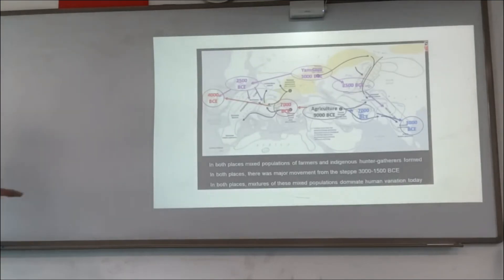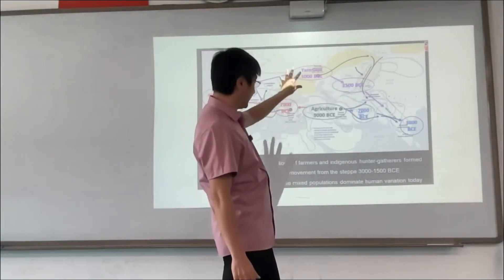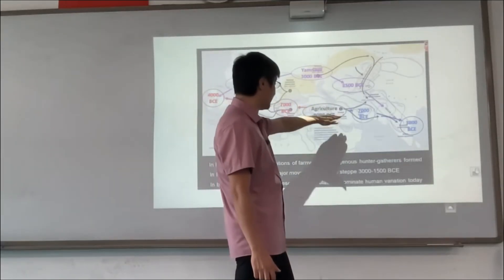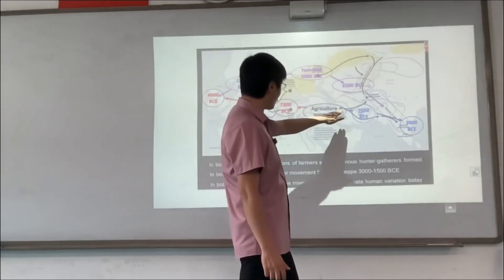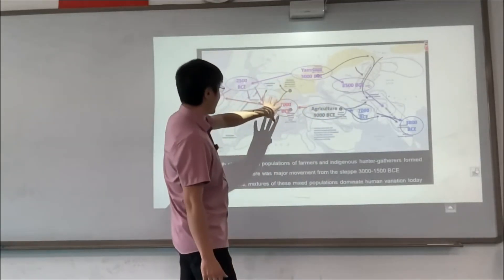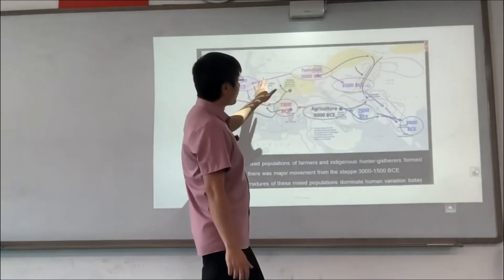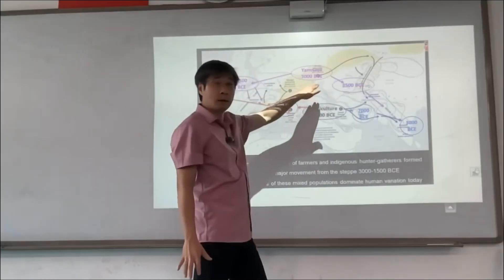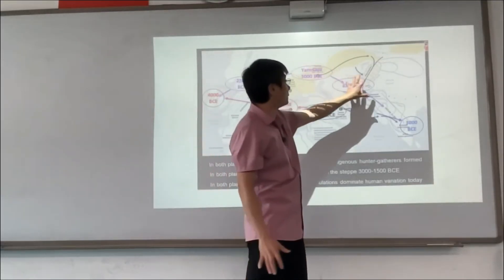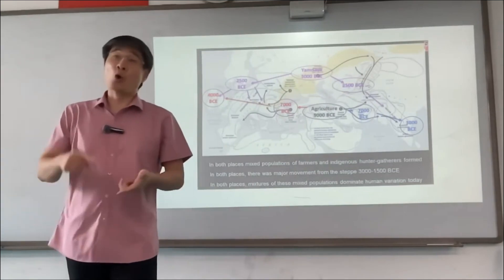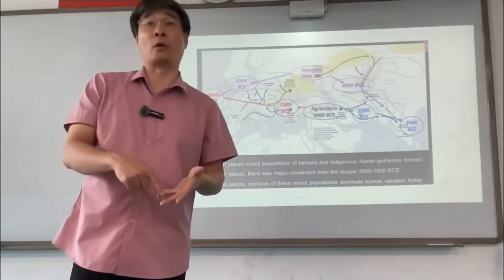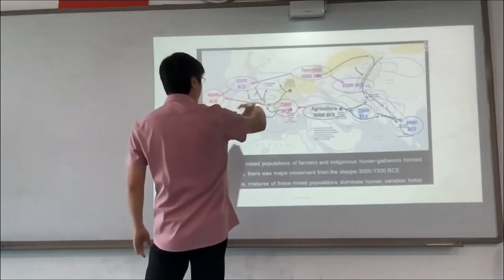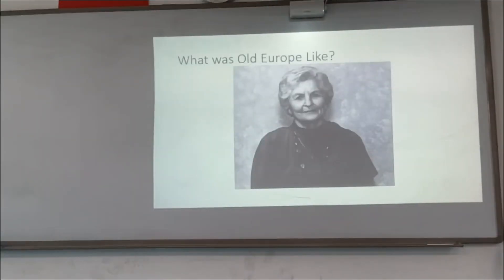So this is a map of the migration. Agriculture was founded in about 9000 BCE in the Near East — Turkey, Anatolia, as well as Israel, Syria, and Jordan. Then it spread from about 7000 BCE to Europe. And the purple is the Yamnaya people, who are believed to be from Ukraine, in the steppes — they spread around the world. Next class we'll discuss who the Yamnaya were and how they conquered the world. But first, I want to look at the farmers who built Europe before the conquest of the Yamnaya.